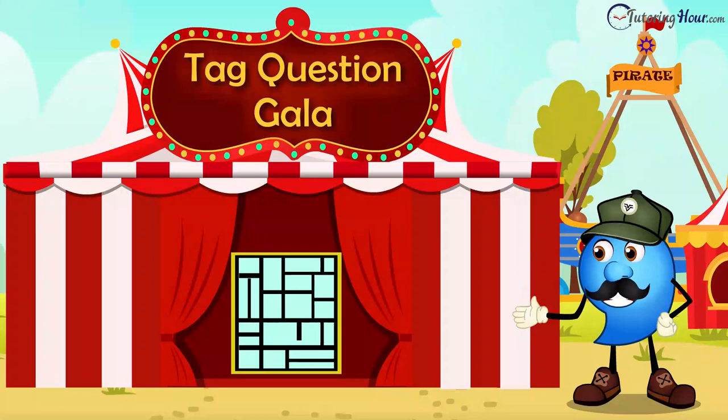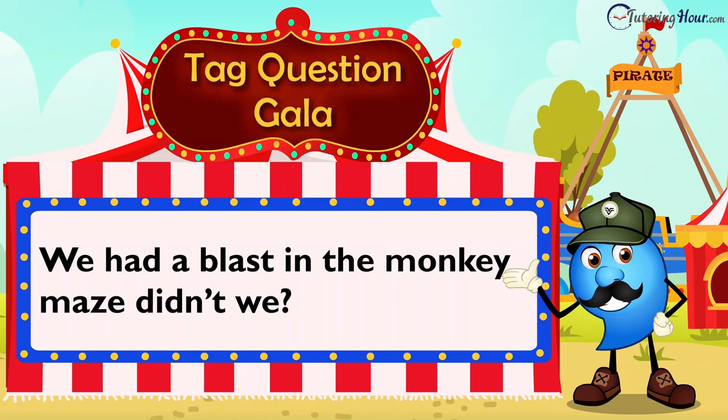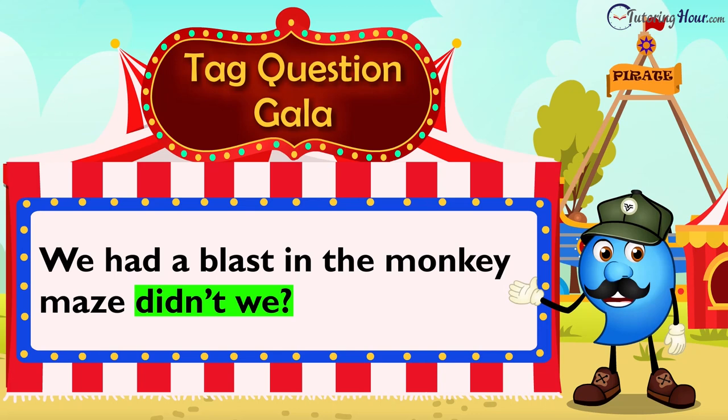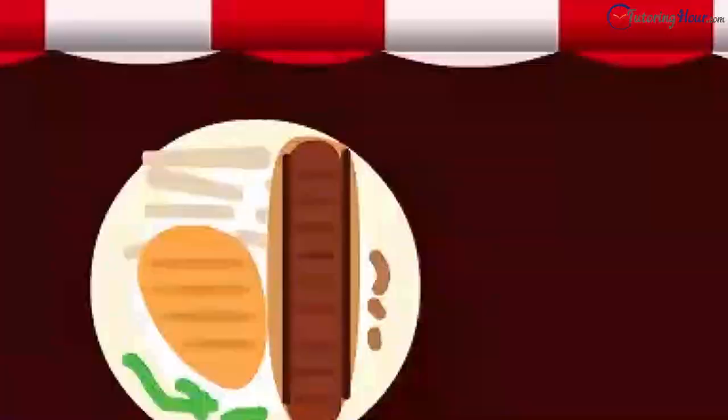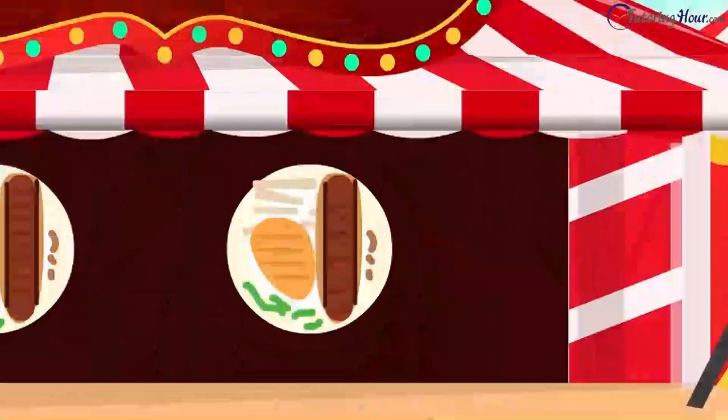We are at the tag question gala tent. Take a look at this sentence strip. Do you see that little question at the end? That's a question tag. We need a comma to separate the question tag. Let's add it! We had a blast in the monkey maze, didn't we?